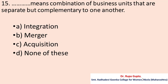Question number fifteen: 'Dash' means combination of business units that are separate but complementary to one another. Options: A. Integration. B. Merger. C. Acquisition. D. None of these. The correct answer is A, integration.